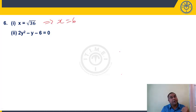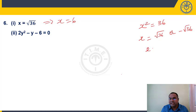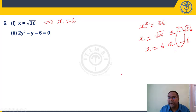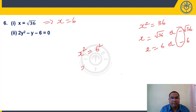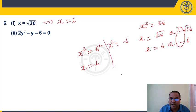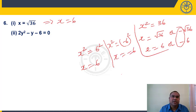x = √36 means x = 6 only (not ±6, because x = √36 is a positive square root). x² = 36 gives x = ±6, but x = √36 gives x = 6. For the indices concept: x² = 36 = 6², and since the power is even, the base can be ±6. But x = √36 means x = 6 only.